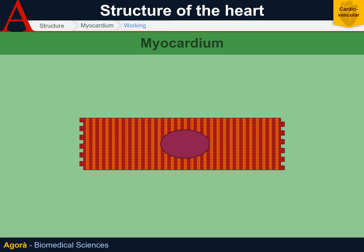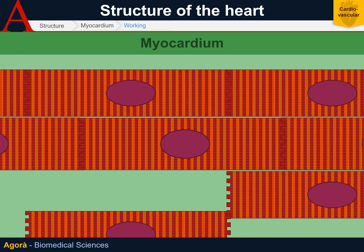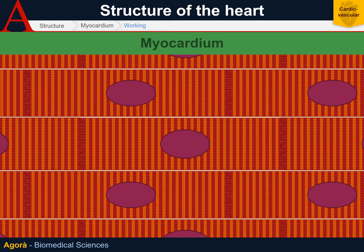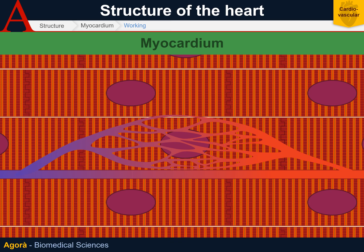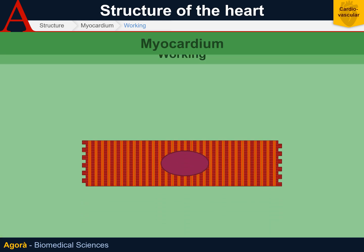These cells have a rich sarcoplasmic reticulum made up of actin and myosin myofilaments that, by sliding on one another, cause contraction. A peculiar characteristic of the myocardium is the presence around each cell of a rich capillary branching that ensures an adequate amount of oxygen to each myocardiocyte, making them well-supplied for aerobic respiration at any moment.